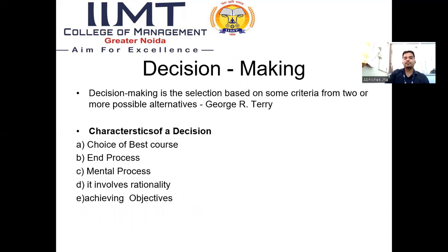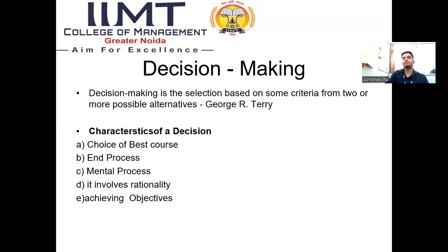In decision making: decision making is the selection based on some criteria. Whenever we decide something we must have some criteria. It is the selection from two or more possible alternatives, as said by George R. Cherry, one of the management scientists. Any decision has some characteristics — like the choice of the best course of action, and basically it is an end process. Decision making is a broad mental exercise — it is a mental process that involves rationality and achieving the objectives.